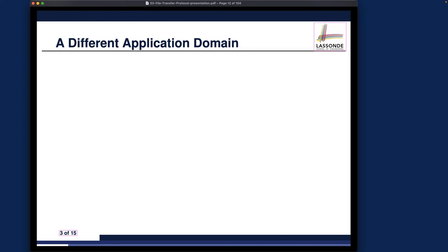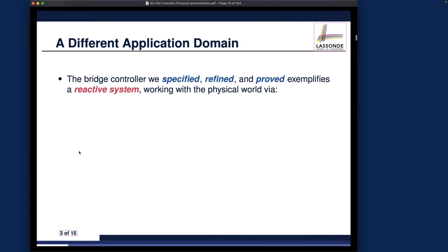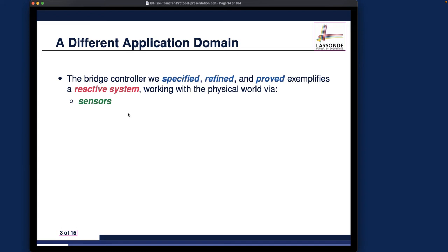To start the discussion, I'd like to clarify the different application domains you'll deal with after completing this lecture. The first application domain we covered was the reactive system, using the bridge controller case study — we did specification, refinements, and proofs. We're going to do something very similar in the new case study but in a different domain. The very important characteristic of a reactive system is that it works with the physical world. A specialized category is the cyber-physical system, which deals with the dynamics of the physical world, but that's beyond the scope of this course.